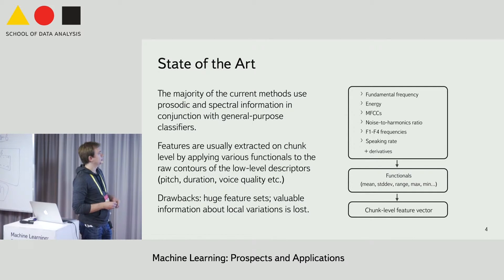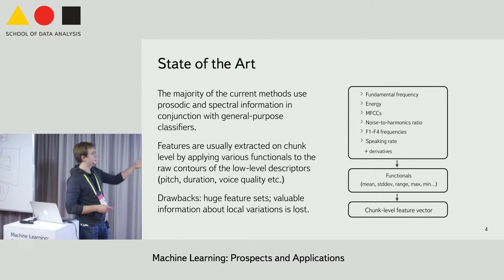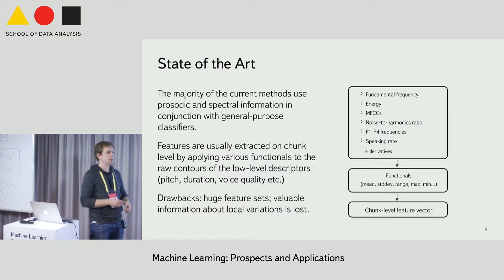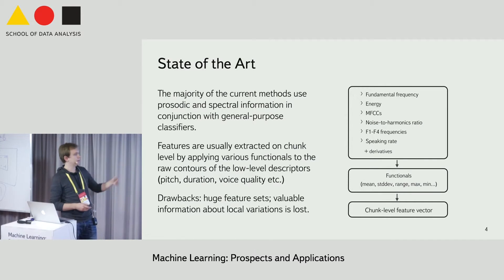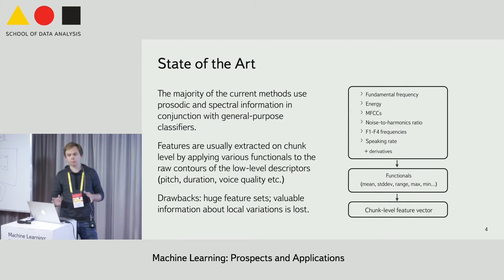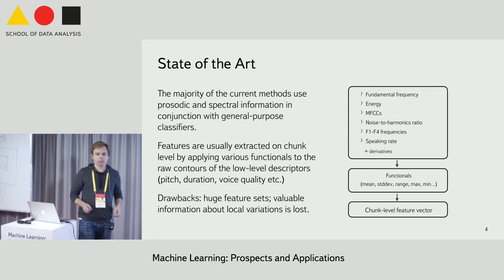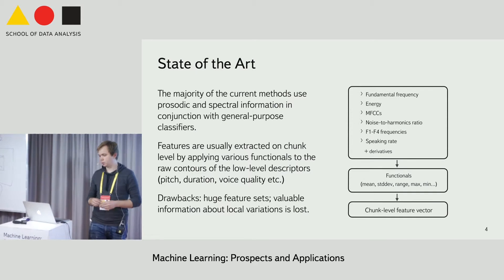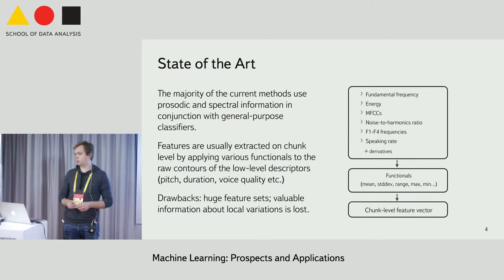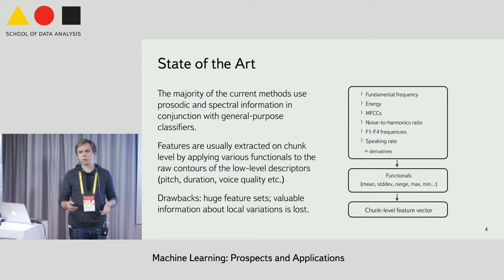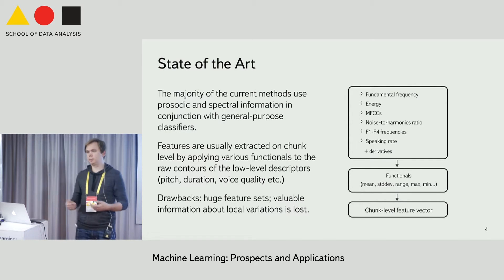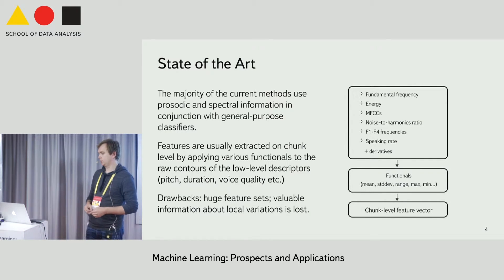We calculate different low-level descriptors like fundamental frequency, energy, MFCCs and so on, calculate their derivatives, and then apply a bunch of different statistical functionals to obtain a static feature vector to describe the shank somehow.